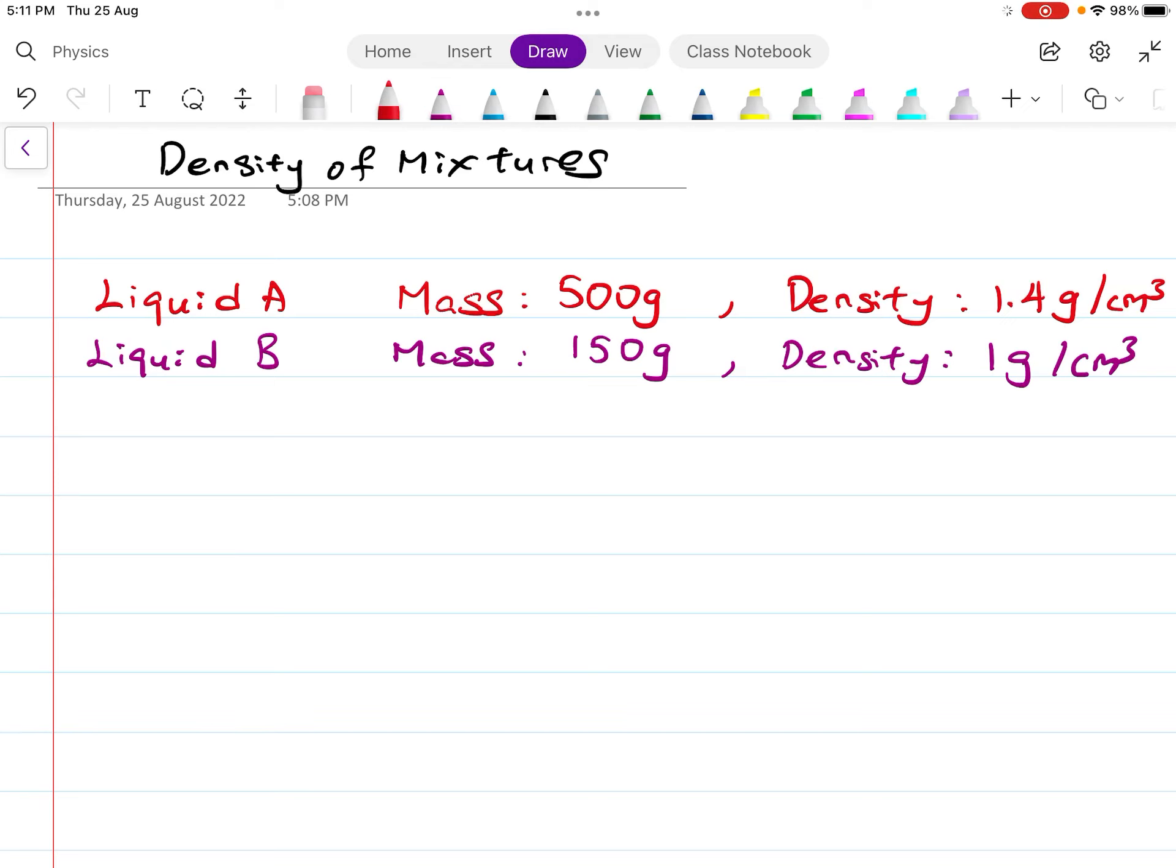First, we must know the formula for density. Density is equal to mass over volume. When you divide mass by volume, you get density. This is the crucial formula for determining how to do this question.